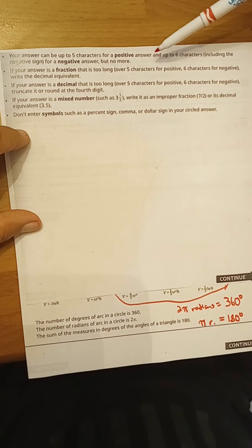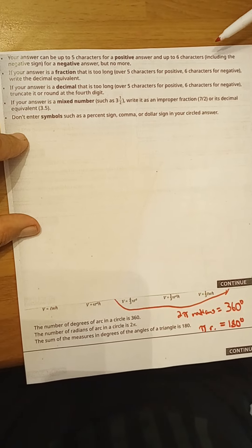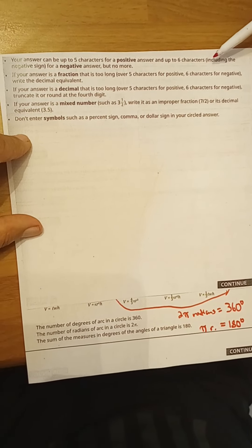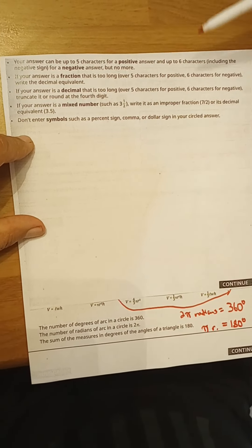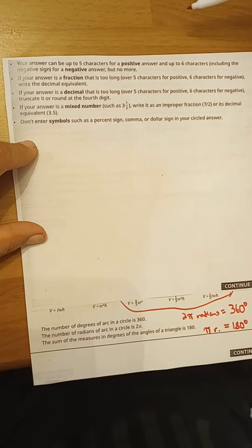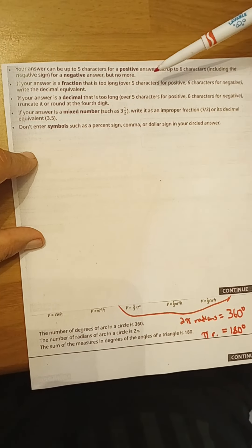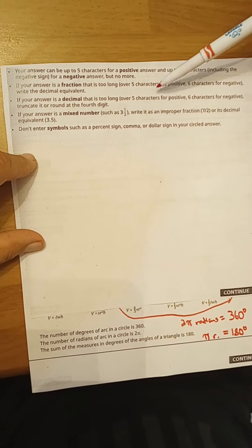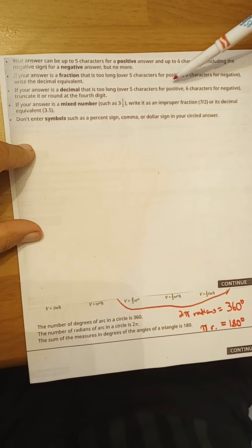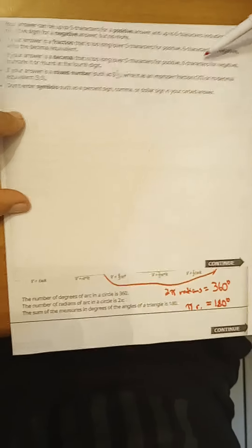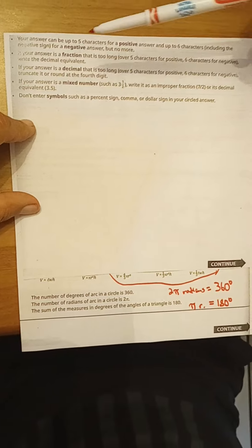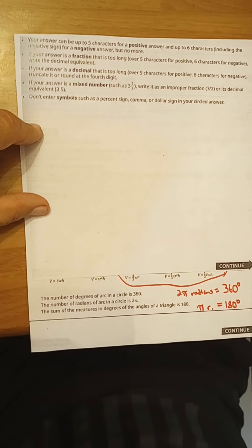If your answer is a fraction that's too long—over five characters for positive or six characters for negative—just simply write the decimal equivalent, and you can use your calculator. If your answer is a decimal that's too long—over five characters for positive or six characters for negative—truncate it, cut it off, or round it at the fourth digit.